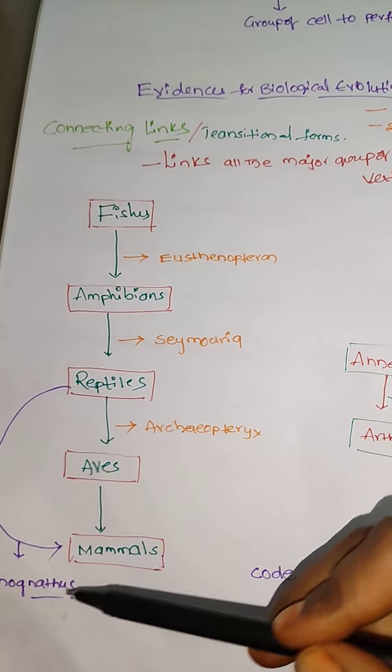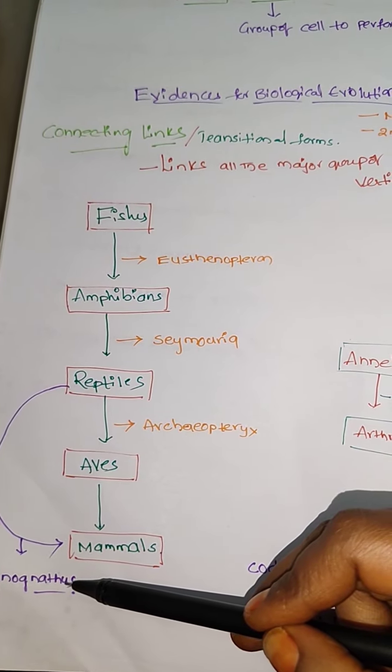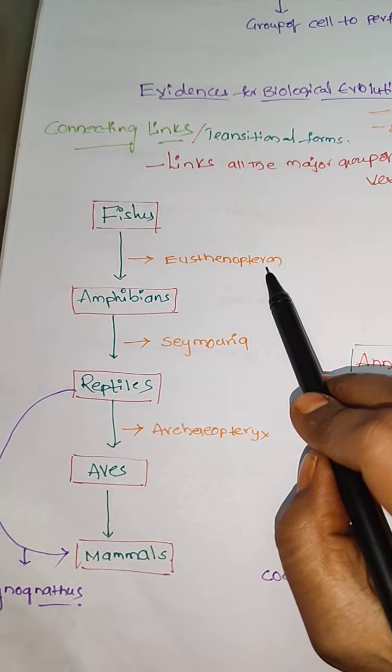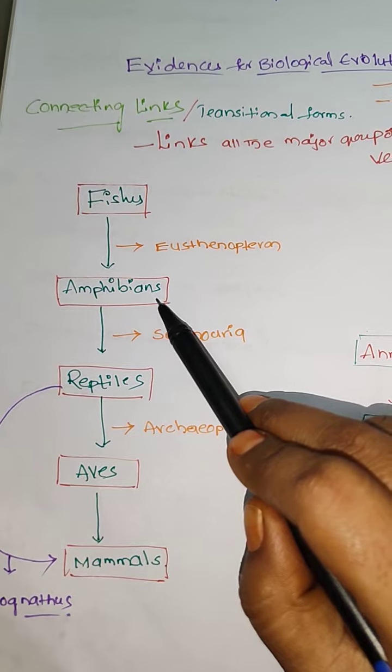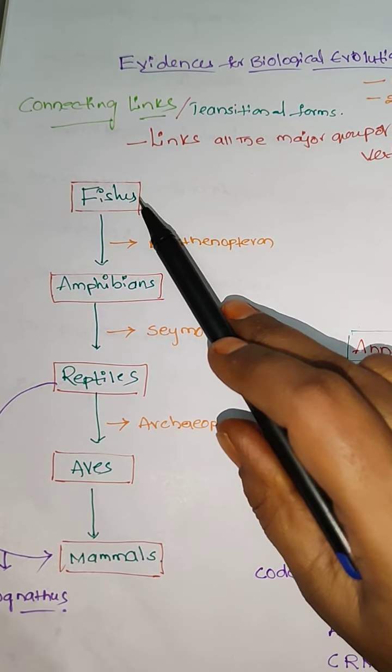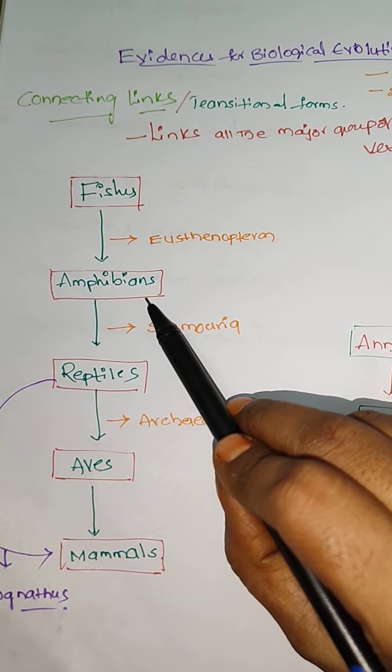Here we have a different type of connecting links. First of all, Eusthenopteron. It is the connecting link between the fishes and amphibians. It has a character of fishes character and also amphibian character.